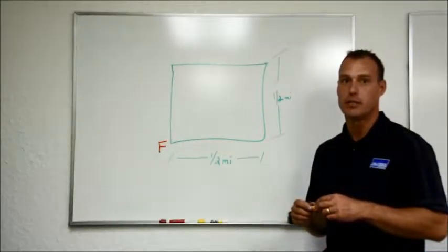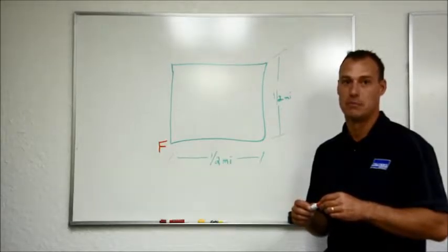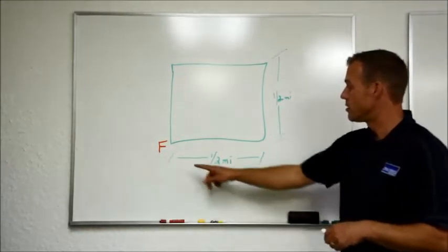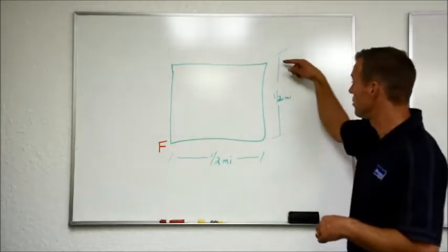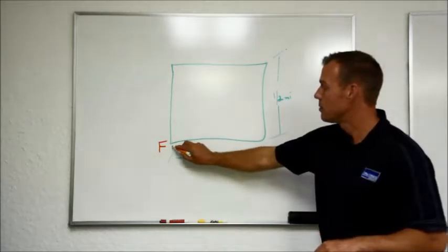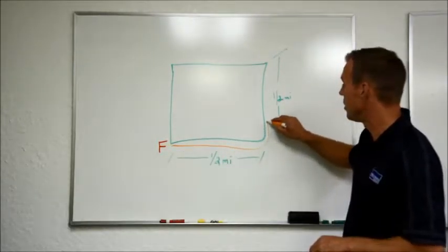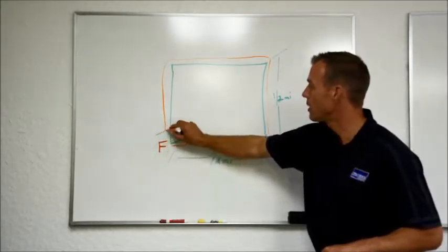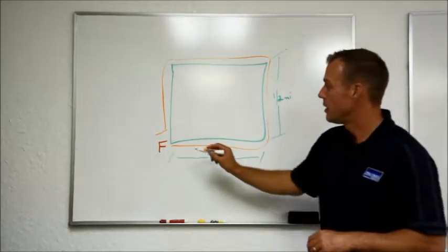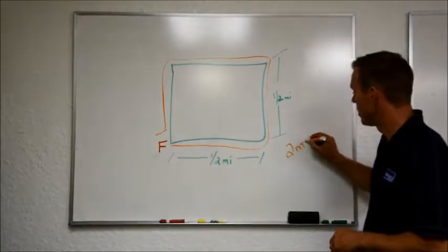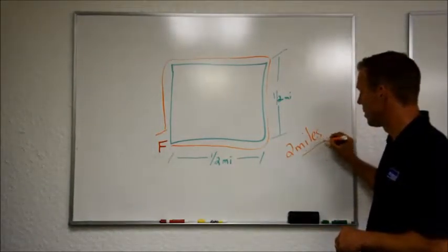We also have the ability to fool power. If you have a pasture that you're fencing off that's one half mile by a half mile, if power were to flow all the way around that structure back to the energizer, it's basically traveling two miles.